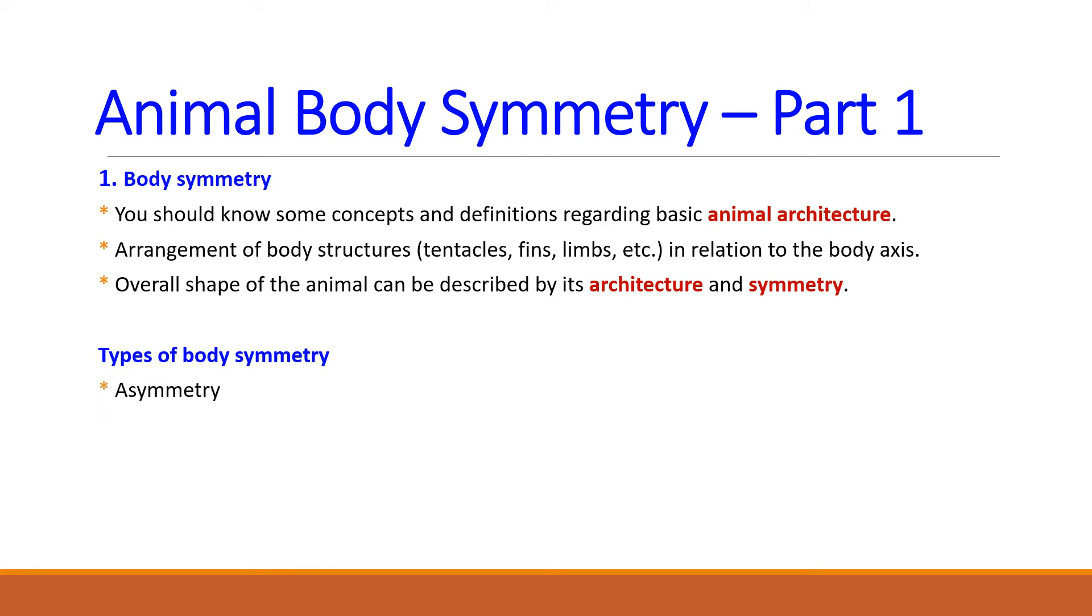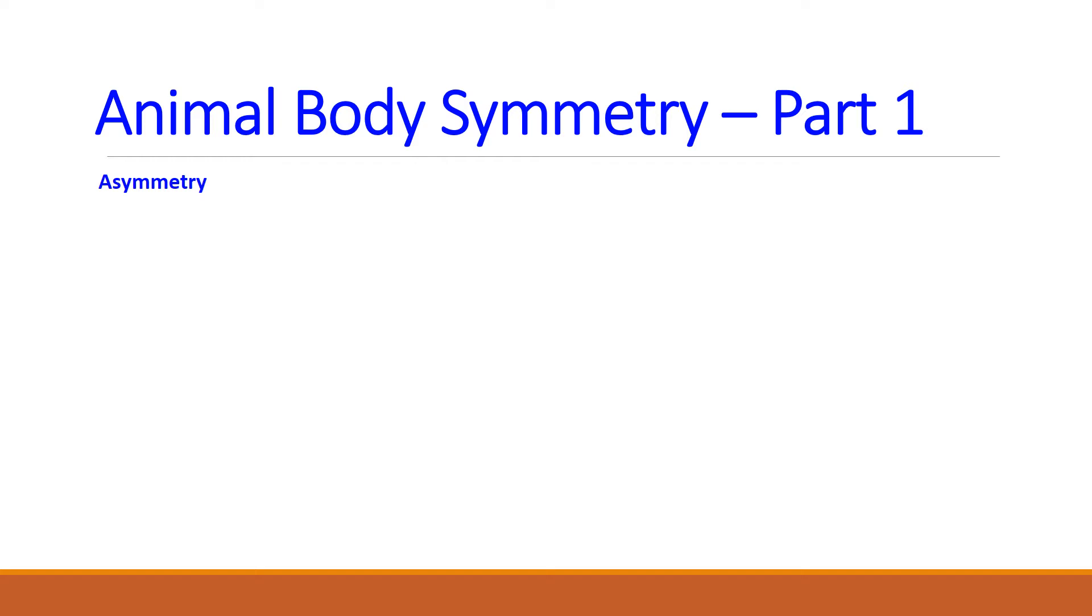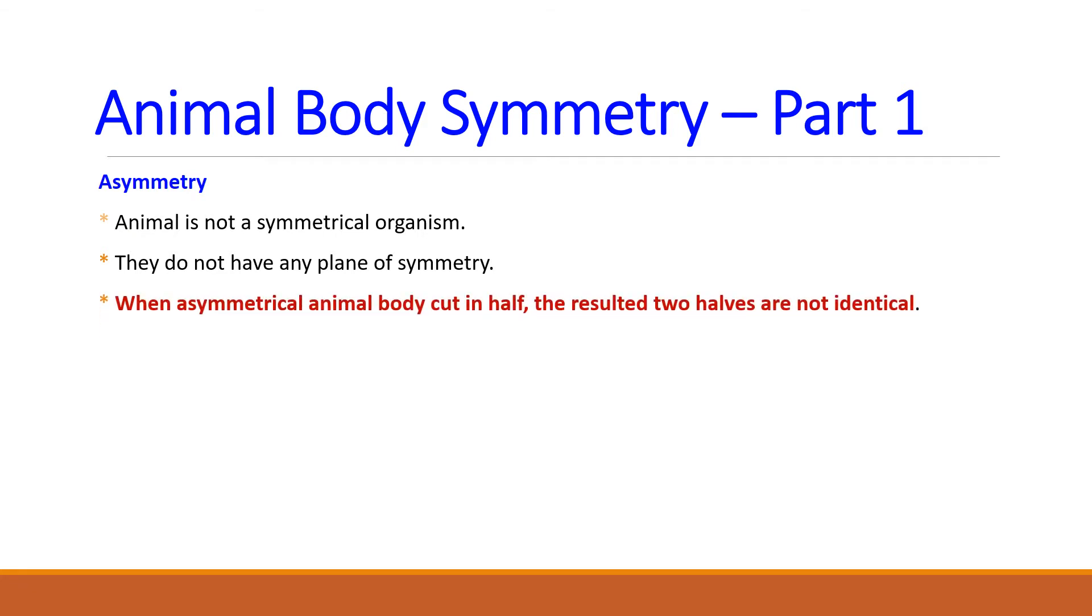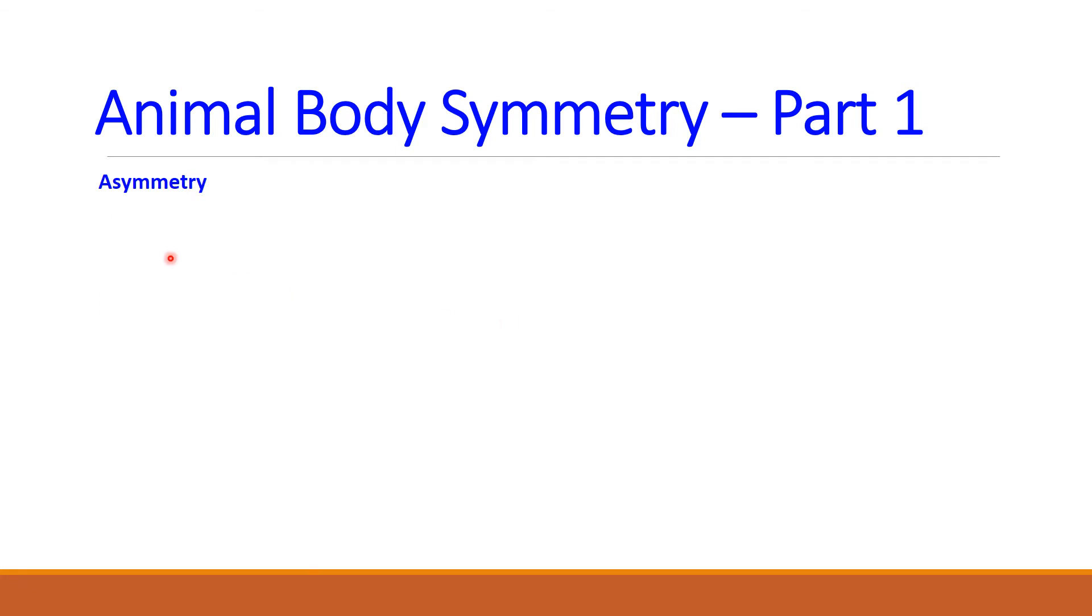The first type of symmetry that you are going to learn is asymmetry. The body of the asymmetrical animal is not symmetrical. Importantly, they do not have any plane of symmetry. When we cut the asymmetrical body of an animal into two halves, the resulted two halves are not identical to each other.